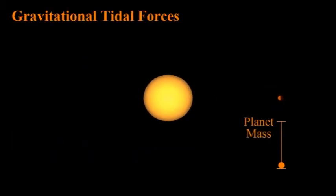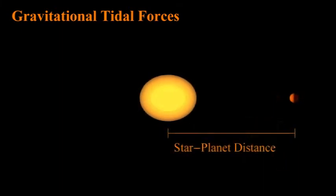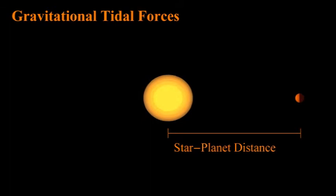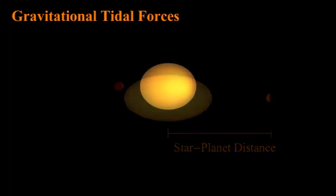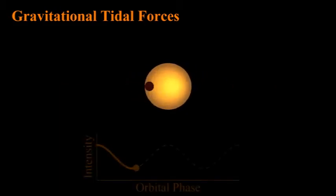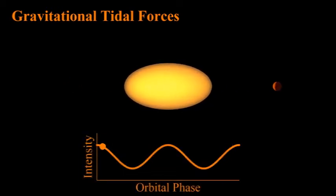Just as the Moon creates ocean tides on Earth, massive planets closely orbiting their host stars create tidal forces stretching the star into an ellipsoid. While exaggerated in these animations, the effect can be significant enough to be detectable. As the planet orbits, the visible cross-section of the star changes, resulting in a light intensity that varies at twice the orbital period.